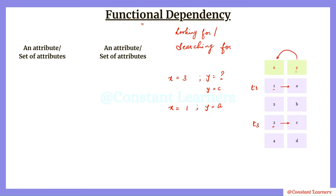Y is dependent on attribute X. So if Y is the dependent attribute, what do we call X? X is responsible for determining the values of Y, so we call X the determinant — it is determining the values of Y. Y is the dependent attribute and X is the determinant attribute. It could be a single attribute or a set of attributes on both sides. The dependent can be a single attribute or a set of attributes, and the determinant can also be a single attribute or a set of attributes. This is the basic concept of functional dependency.